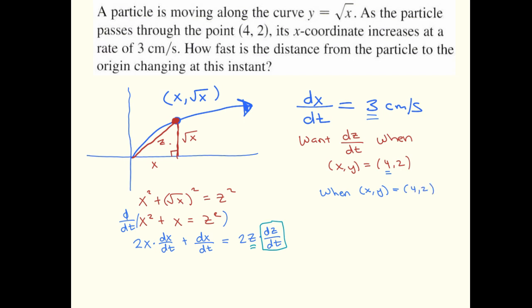When the particle's at the point (4, 2), the triangle looks like this. So that's 4, that's 2, and by the Pythagorean theorem this is root 20. So that's our z.